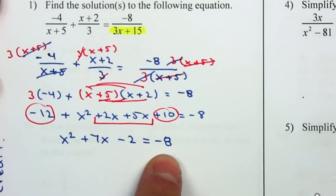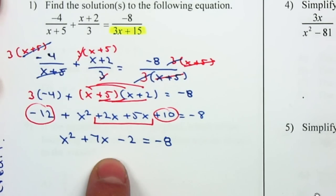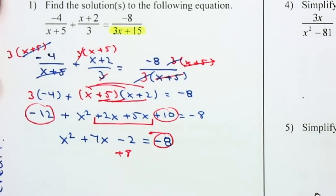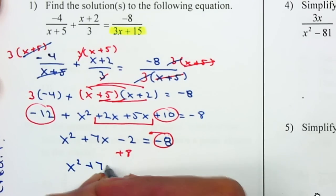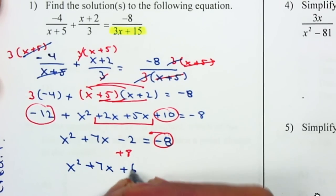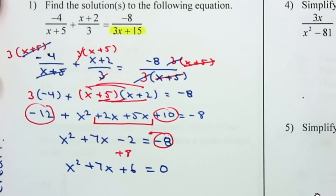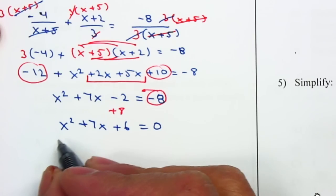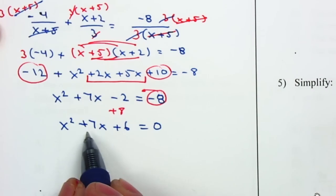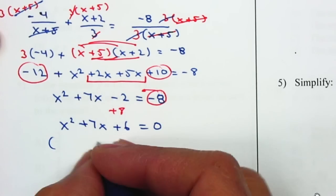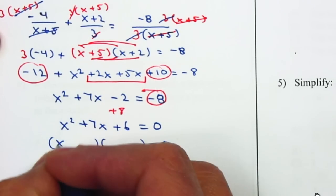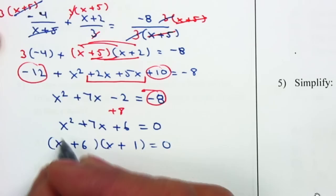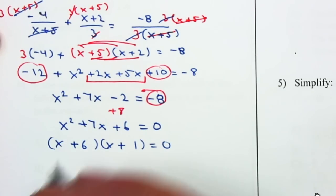I still have a quadratic equation, so I want to make it equal to 0 to see if I can factor it. That gives me x² + 7x + 6 = 0. If I can't factor it, I'll use the quadratic formula — I can't complete the square because 7 is odd. But we can factor it: x² + 7x + 6 = (x + 6)(x + 1), since factors of 6 are positive 6 and positive 1, and 6 + 1 = 7.